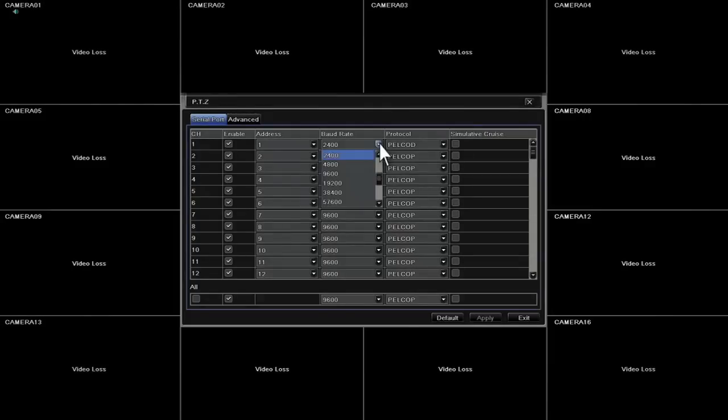Here, you will input the baud rate and protocol of the camera and click Apply. For example, we need to put Address 1, baud rate 2400, and protocol PELCO-D.